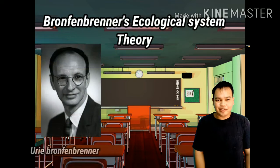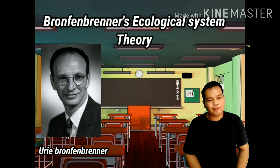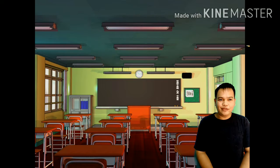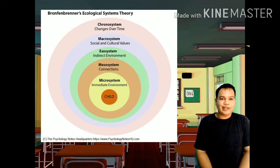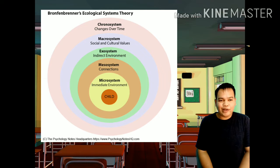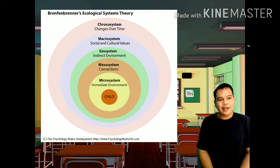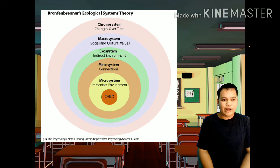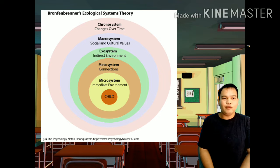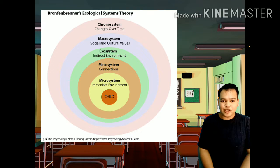Bronfenbrenner's ecological systems theory. Bronfenbrenner believed that a person's development was affected by everything in their surrounding environment. He divided a person's environment into five different levels: the microsystem, the exosystem, the macrosystem, and the chronosystem. Bronfenbrenner's bioecological systems theory helped practitioners to consider the balance of influences which are likely to play a part in the development of any young child.